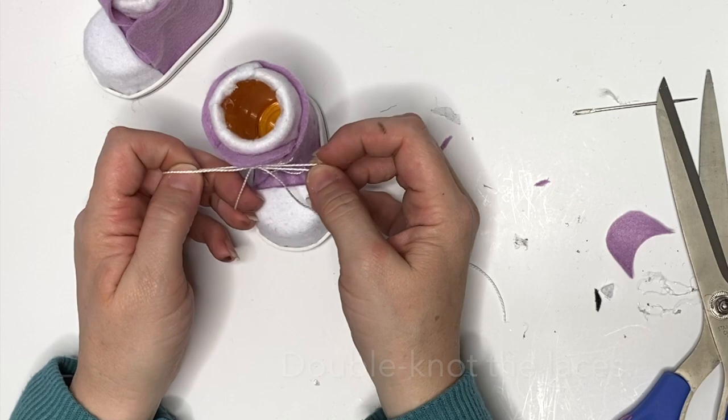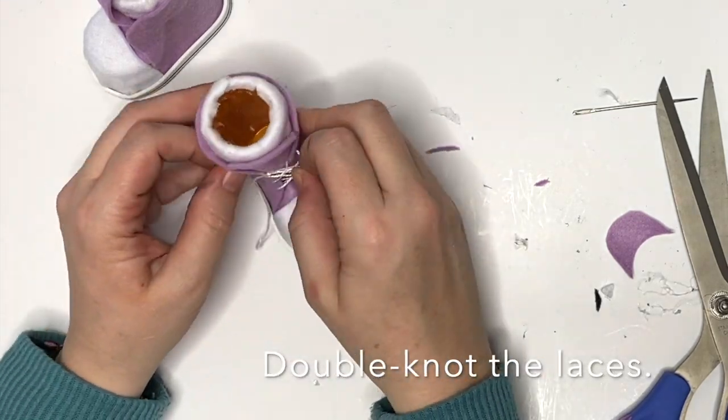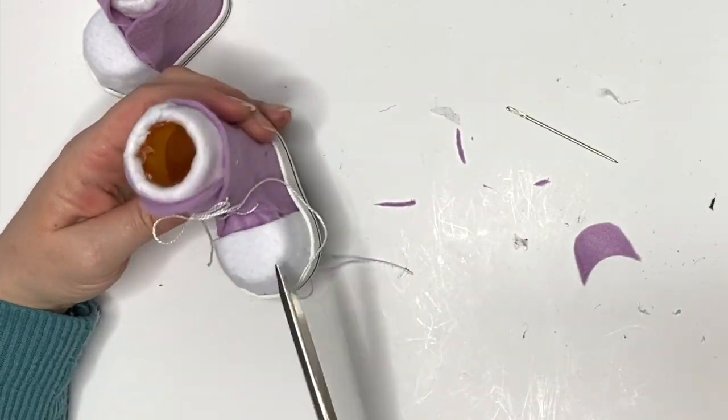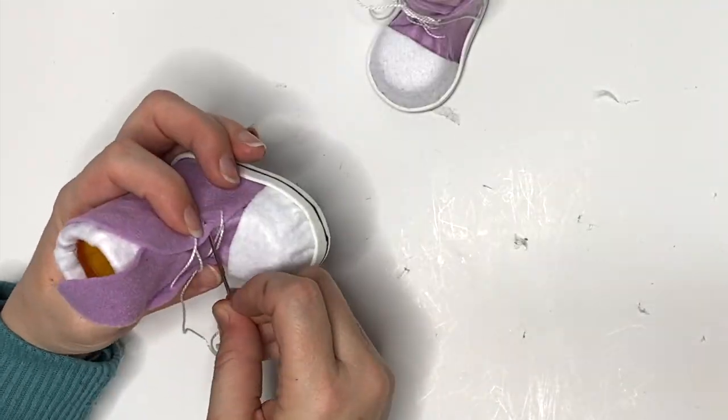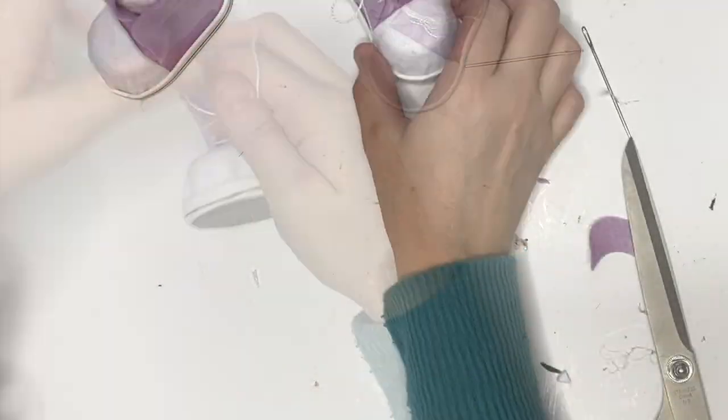Okay, so you just tie it off, double knot it. You can add a little piece of hot glue right in the center of the laces if you have small children. Just saying. Ask me how I know. And you repeat it for the other shoe there.